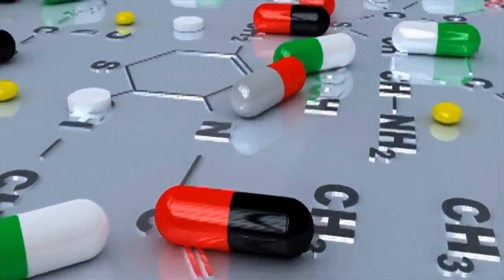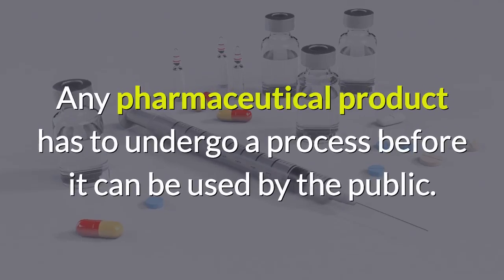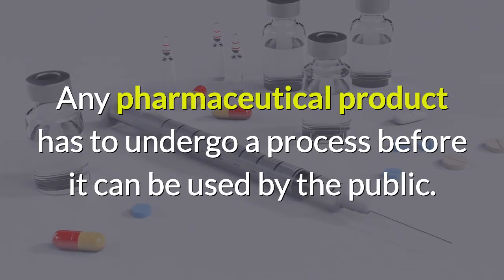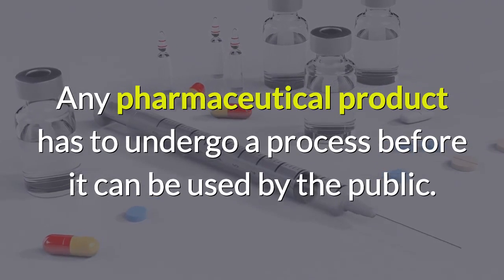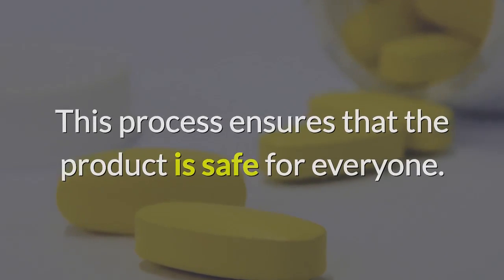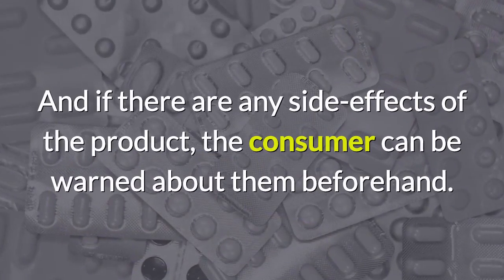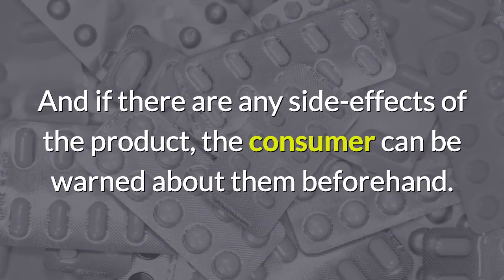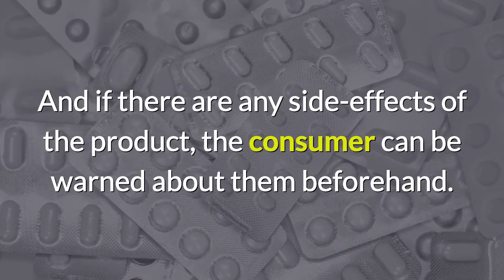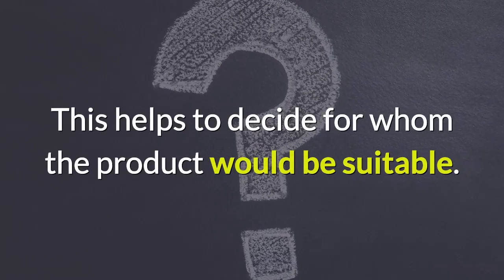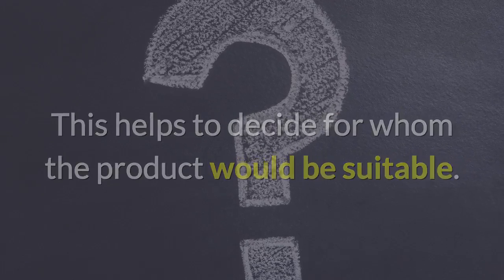ALCOA in pharmaceuticals. Any pharmaceutical product has to undergo a process before it can be used by the public. This process ensures that the product is safe for everyone, and if there are any side effects, the consumer can be warned about them beforehand. This helps to decide for whom the product would be suitable.